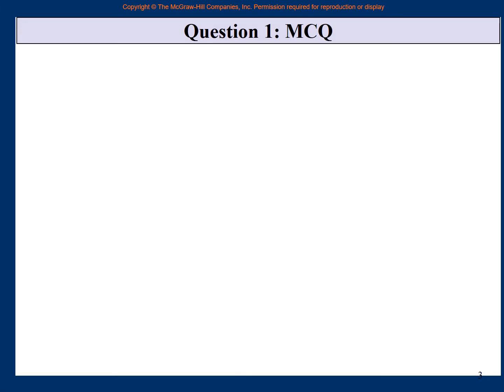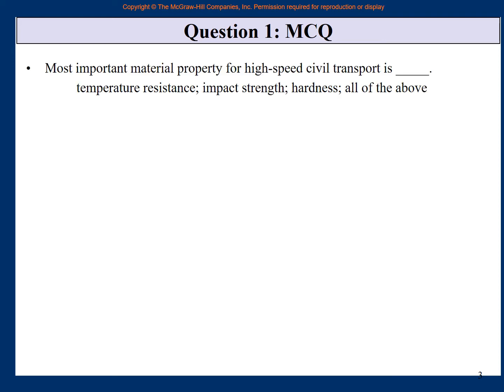The first question is of course the multiple choice question from different chapters. Most important material property for high-speed civil transport is what? Temperature resistance, impact strength, hardness, all of the above. So if you remember that when there is a large civil transport carrying 300-400 people, this is very large in size, and it is traveling at speeds of sound and above high-speed, Mach 2, Mach 3, and so on. So the most important problem becomes the friction on the body with the air, which generates a lot of heat. So temperature resistance would be your answer.